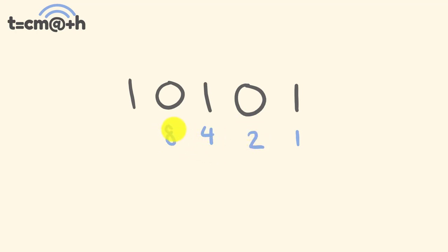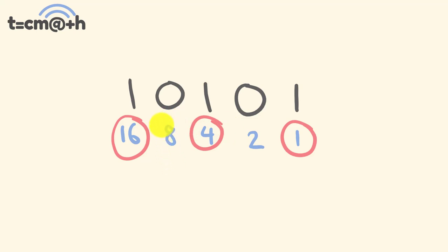Now let's convert back from binary to decimal. Take 10101. Start with 1 and double for each digit position: 1, 2, 4, 8, 16. Where we have a 1 in the binary number, those values are part of our answer. We have 16, 4, and 1. Add them together: 16 plus 4 is 20, plus 1 is 21. So 10101 in binary equals 21 in decimal.